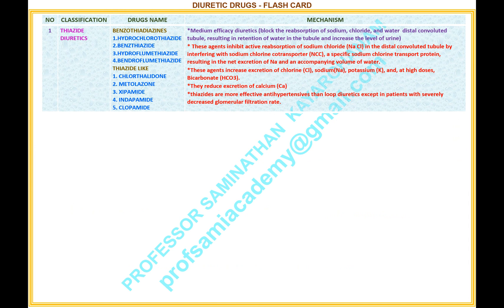A detailed explanation: these agents increase the excretion of chlorine, sodium, potassium, and at high doses, bicarbonate. They reduce the excretion of calcium. Thiazides are more effective antihypertensives than loop diuretics, except in patients with severely decreased glomerular filtration rate.